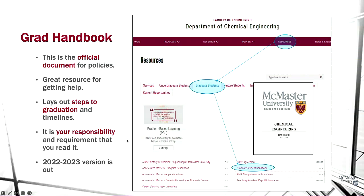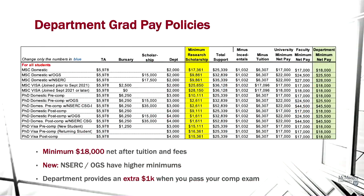We update this document every year, so the 2022–2023 version should be online now. Regarding grad pay: we're doing pretty well compared to other departments. No matter if you're an international student, domestic student, master's, or PhD, you will get a minimum net pay or stipend of $18,000. That is our department minimum — after you pay tuition and all fees, you will have at least $18,000 to take home for living expenses.